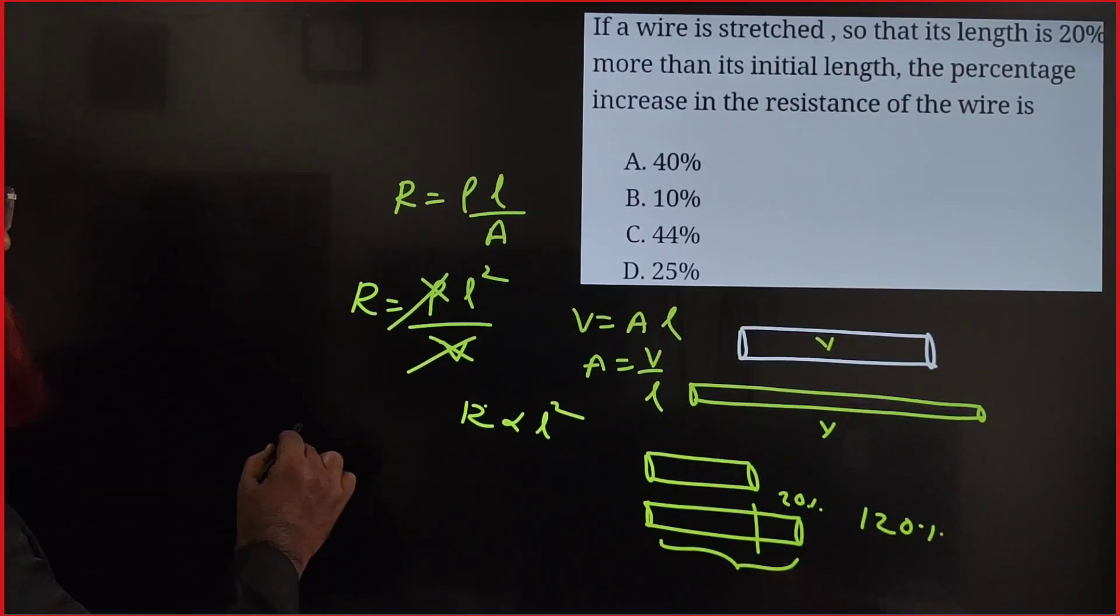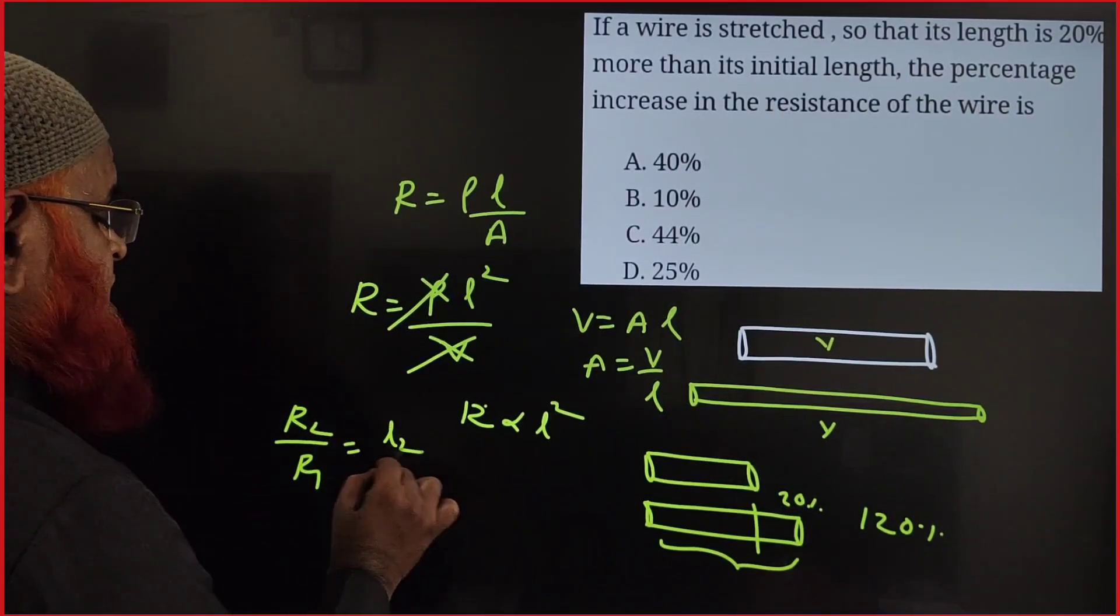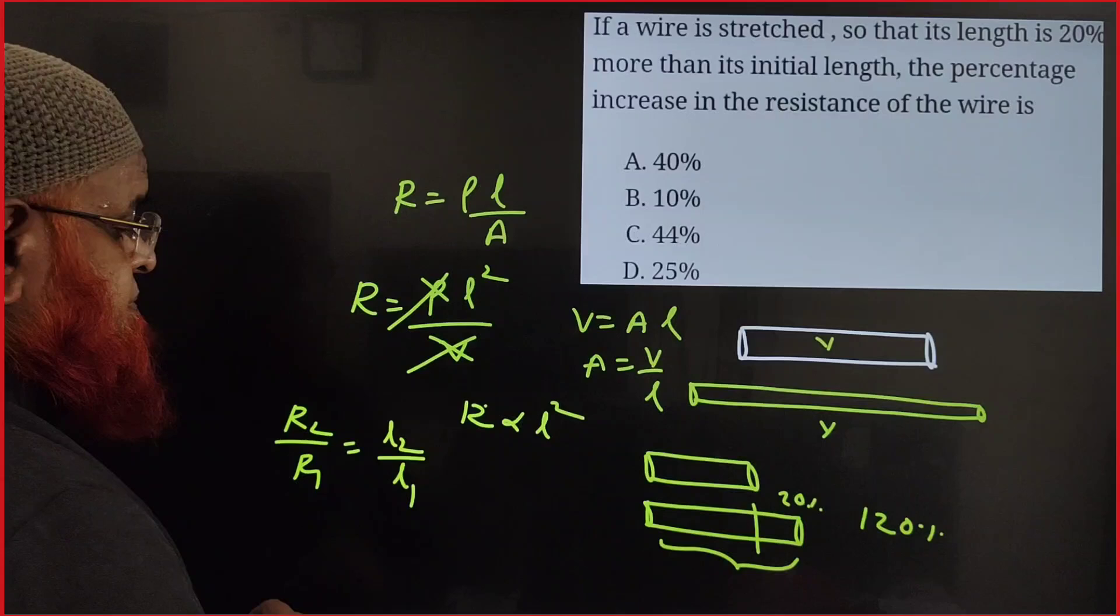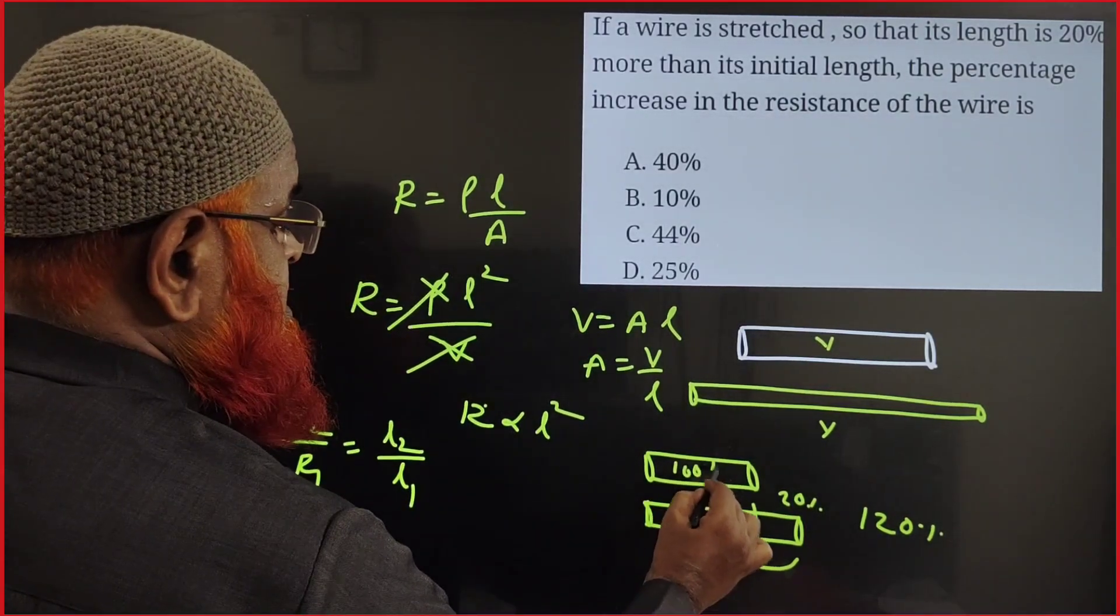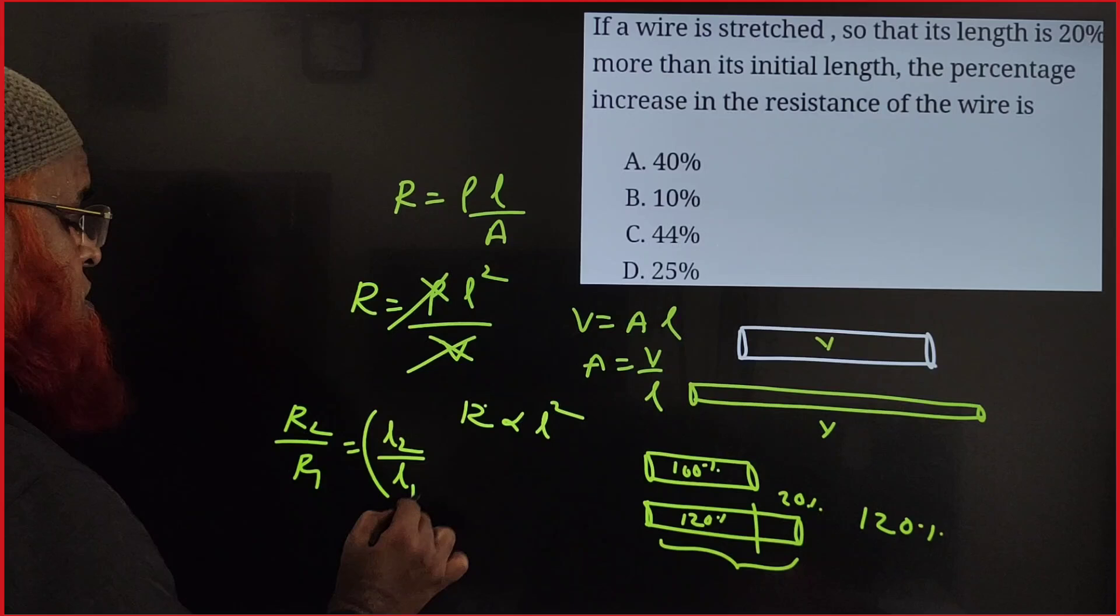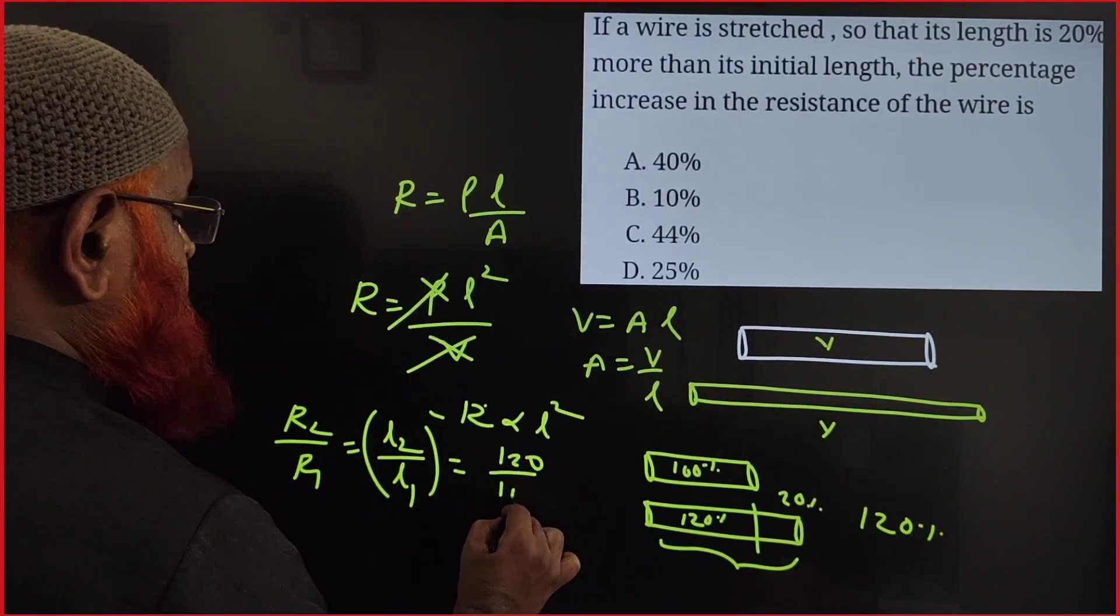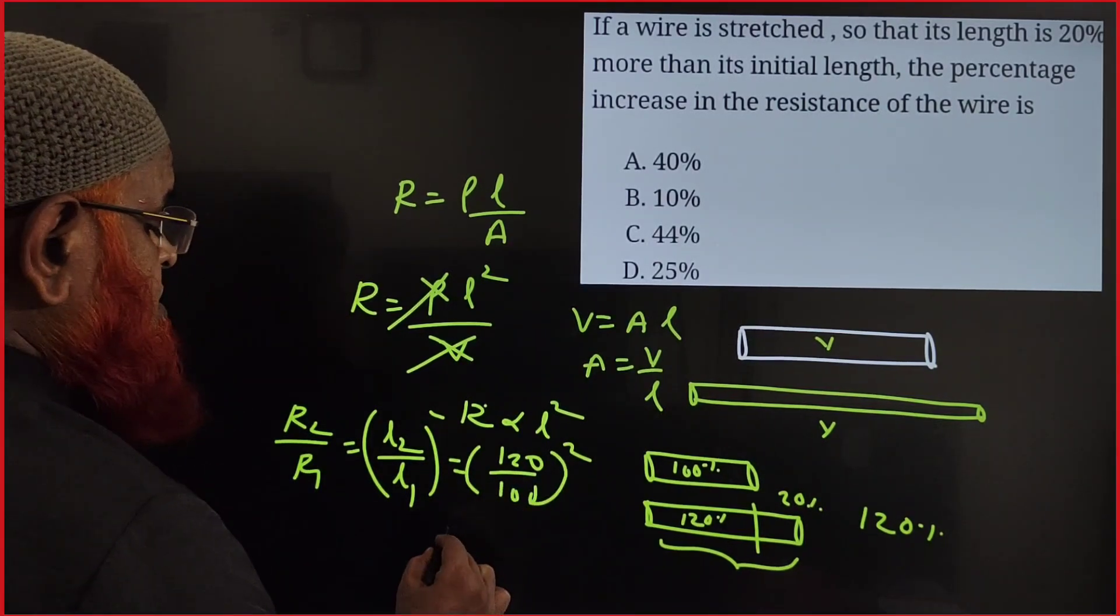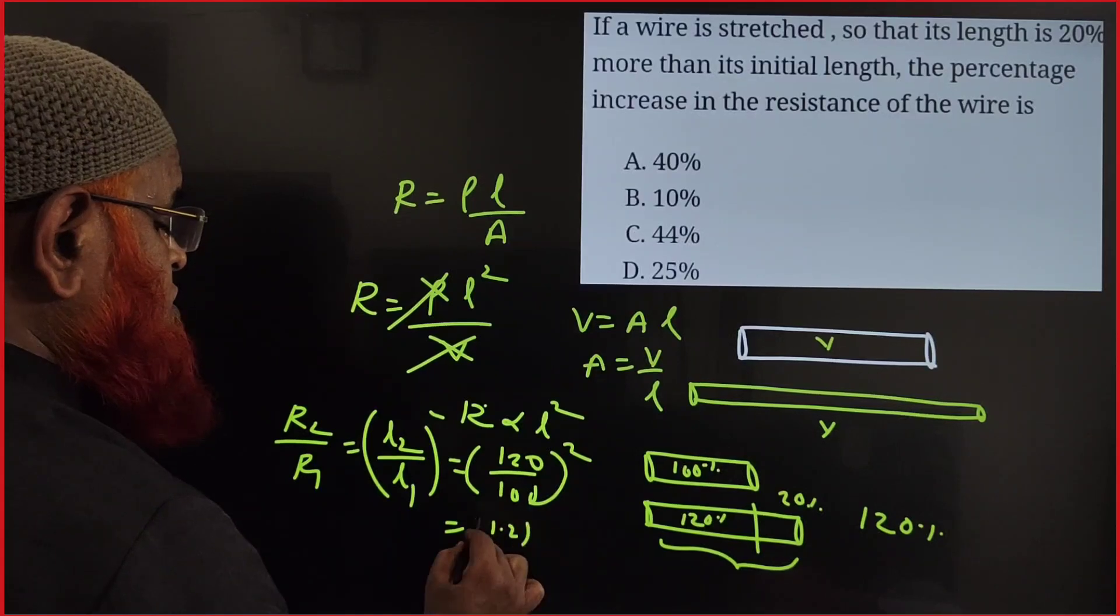So here, see what we will do. R₂ by R₁ is equal to L₂ by L₁, is it right? Previously it was 100%, now it has become 120%, whole square. So whole square. L₂ is how much? 120 divided by 100, whole square. So how much will become? Actually 2 zeros means it becomes 1.2 whole square. OK, answer 1.2 whole square means how much?